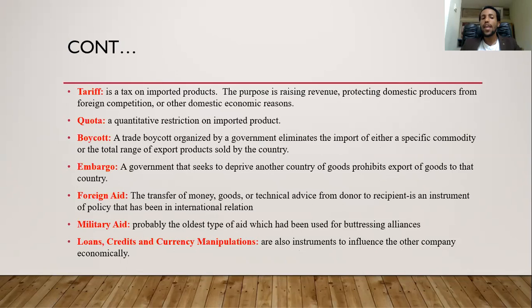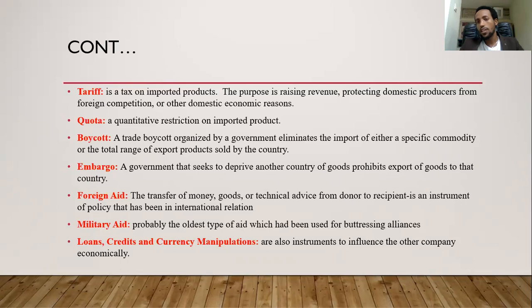Looking at instruments one by one: the first is tariff — a tax on imported products. For example, if you import clothes or televisions into Ethiopia, there is a tax called a tariff. By increasing or decreasing this tariff, you can fulfill your diplomatic objective. The second is quota — a quantitative restriction on imported products, meaning you can prohibit imports or limit the quantity allowed in from a specific country.